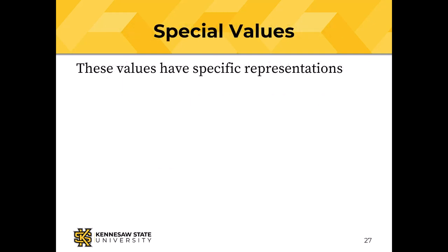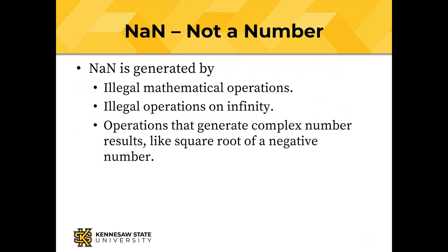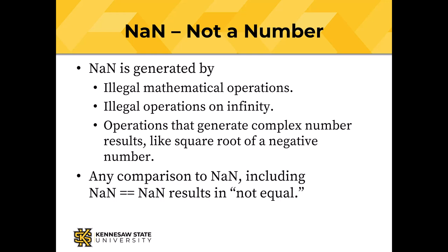Floating point numbers have some special values with specific representations. Zero is representable exactly, and so is negative zero, because floating point numbers are signed magnitude. Positive and negative infinity have special representations. There is also a representation for not-a-number (NaN). NaN is generated by illegal mathematical operations, illegal operations on infinity, or operations that generate complex results, like the square root of a negative number. Any comparison to NaN — including comparing NaN to itself — results in not equal.